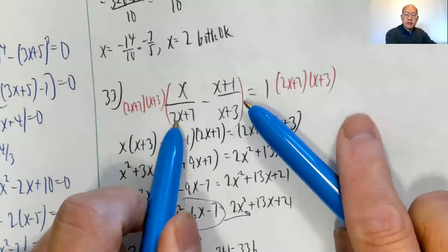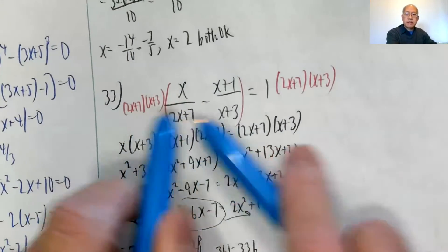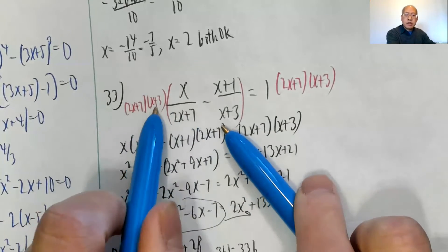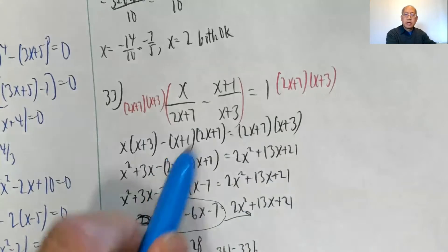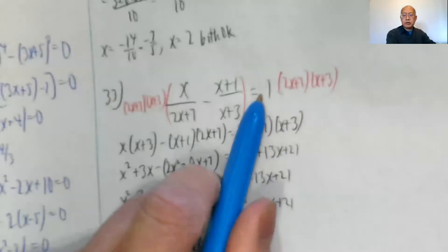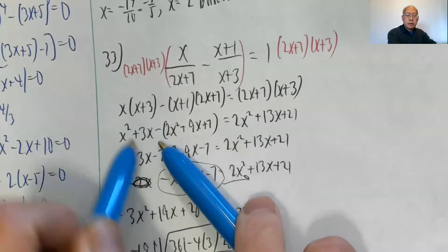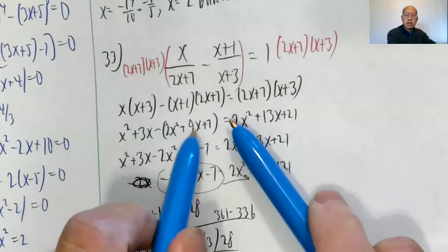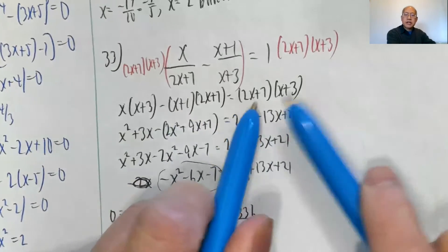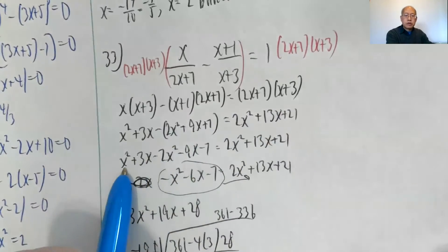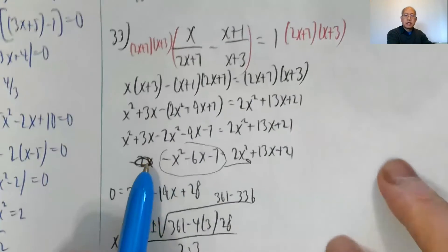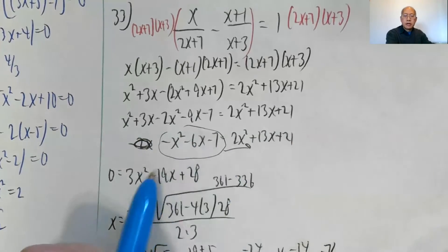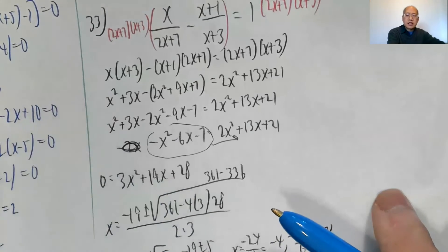Problem thirty-three: again clear the fractions, multiply both sides by two x plus seven times x plus three. The two x plus seven cancels, giving x times x plus three. The x plus three cancels, giving two x plus seven times x plus one. Distributing and combining: x squared plus three x minus parentheses two x squared plus nine x plus seven equals two x squared plus thirteen x plus twenty-one. Combining like terms on the left gives negative x squared minus six x minus seven.